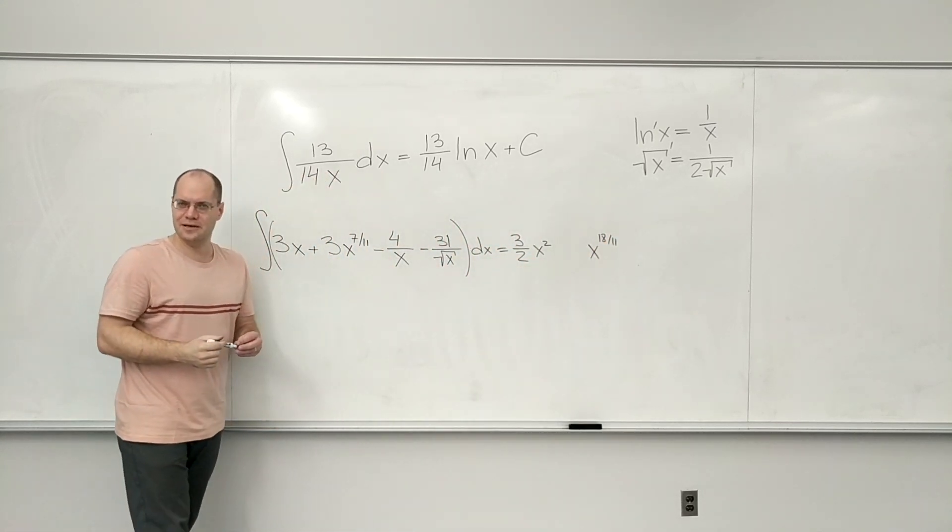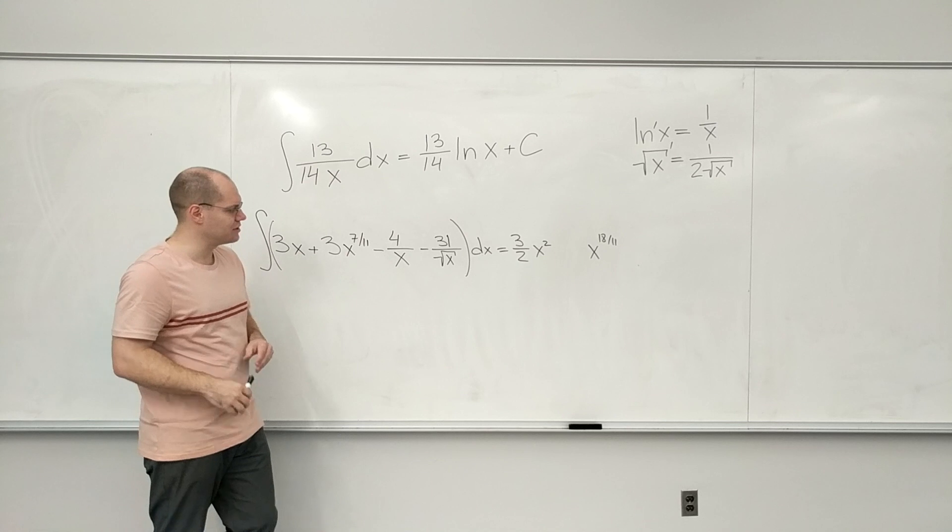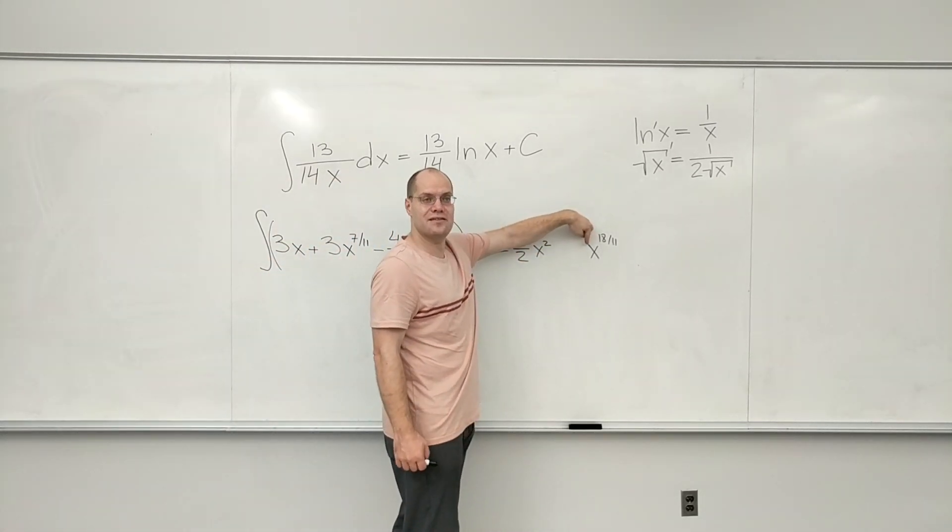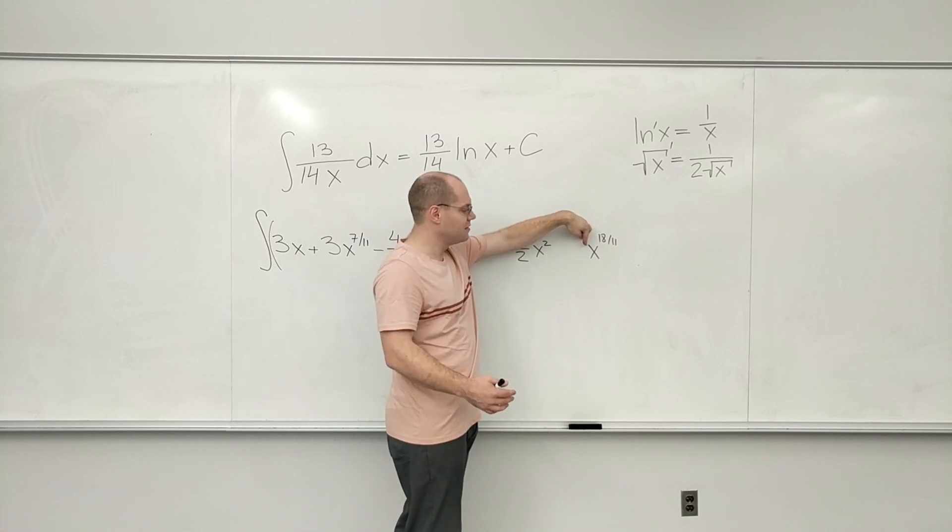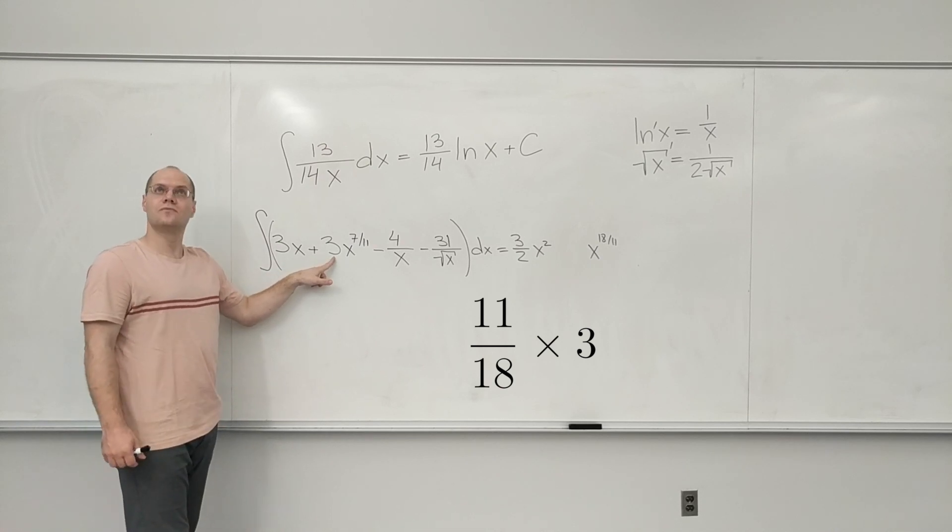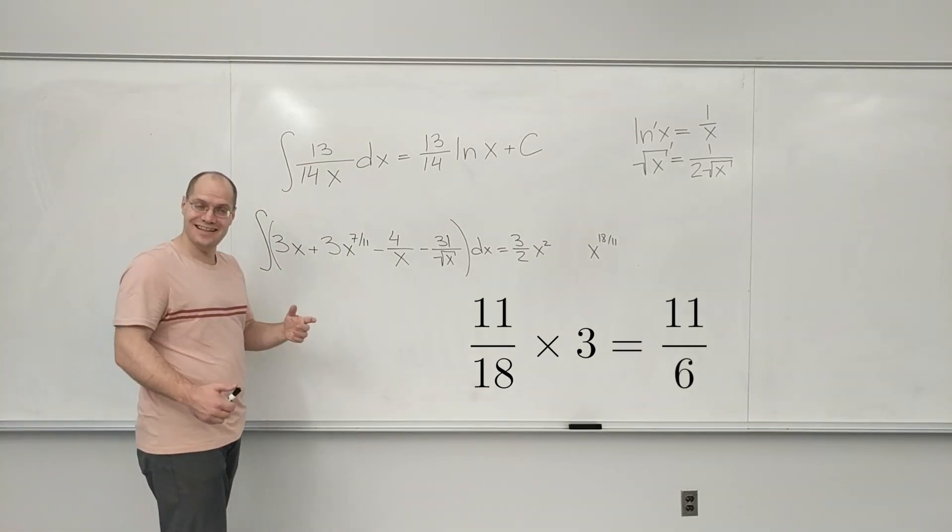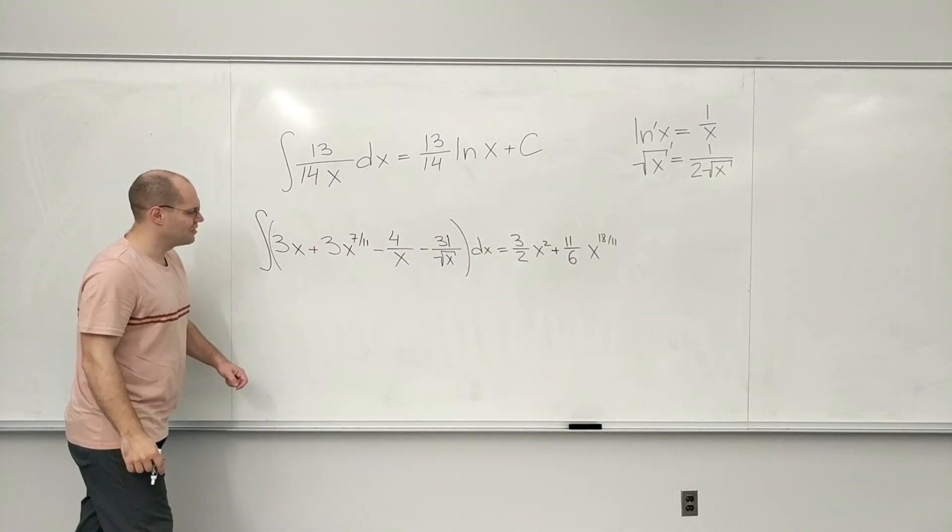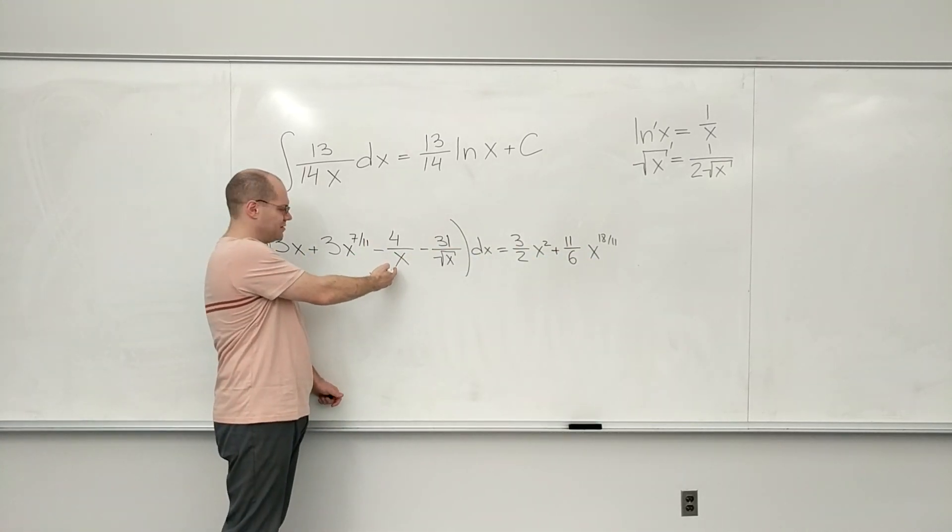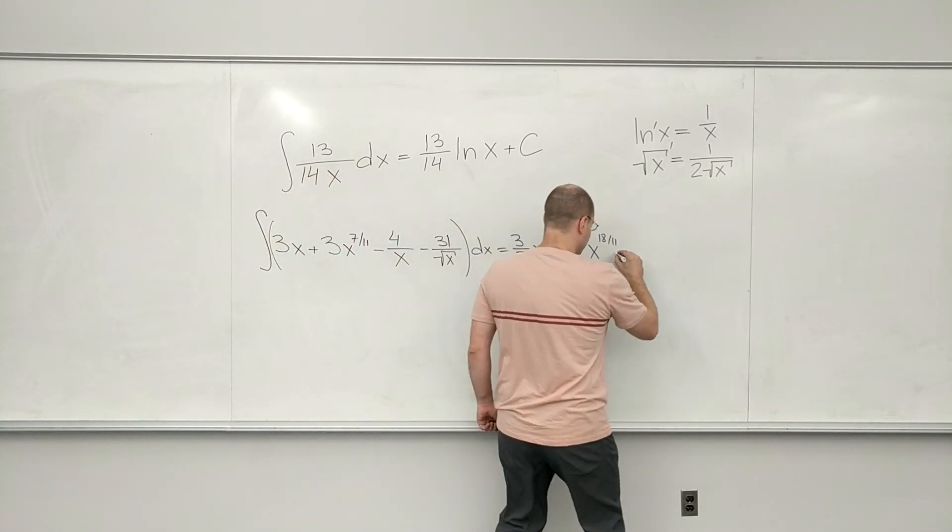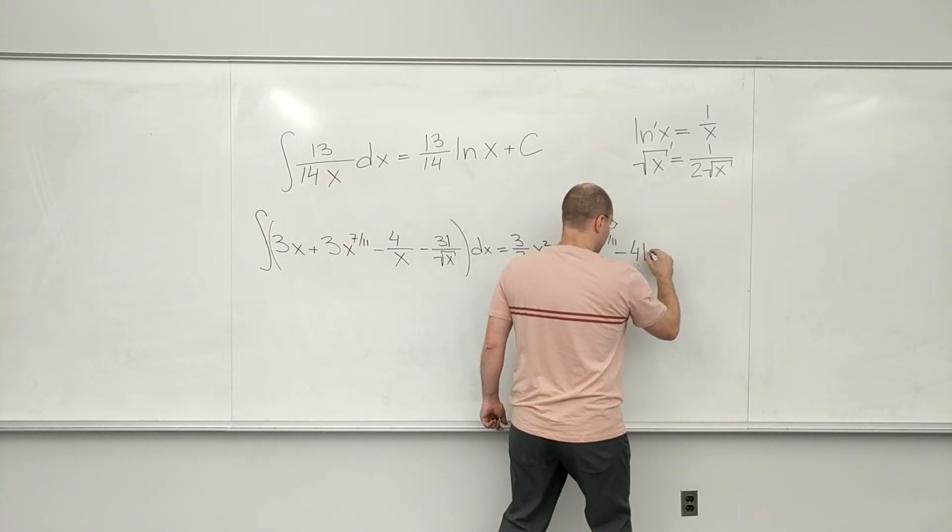I will now no longer think about the power because I know I got it correctly. So I'll just realize that when I take the derivative of this, 18 over 11 comes down, so I have to make up for it with 11 over 18. 11 over 18 times 3 is 11 over 9. No, 11 over 6. 11 over 18 times 3 is 11 over 6. Okay, this is a nice, inviting natural log. So minus 4 log of x.